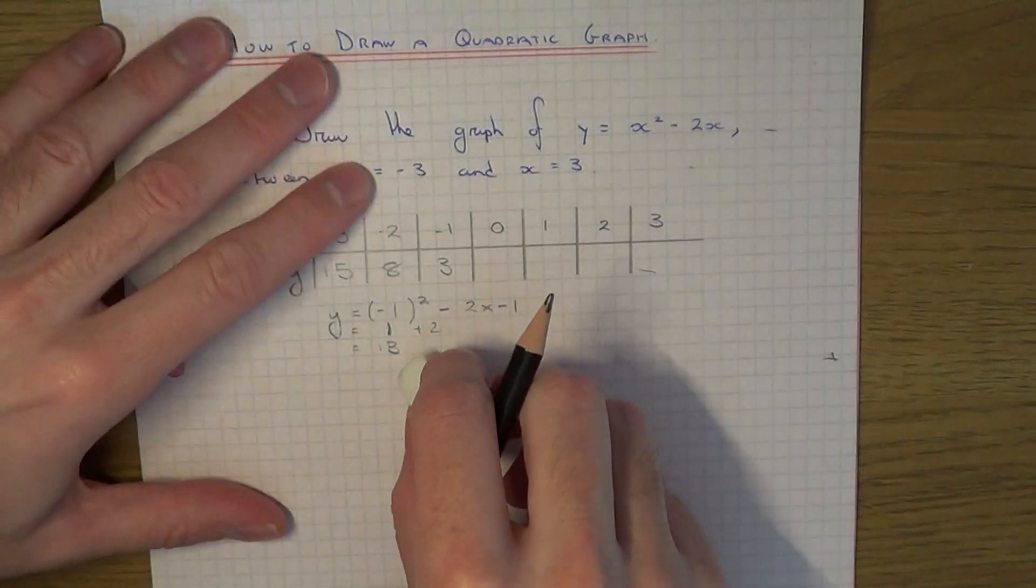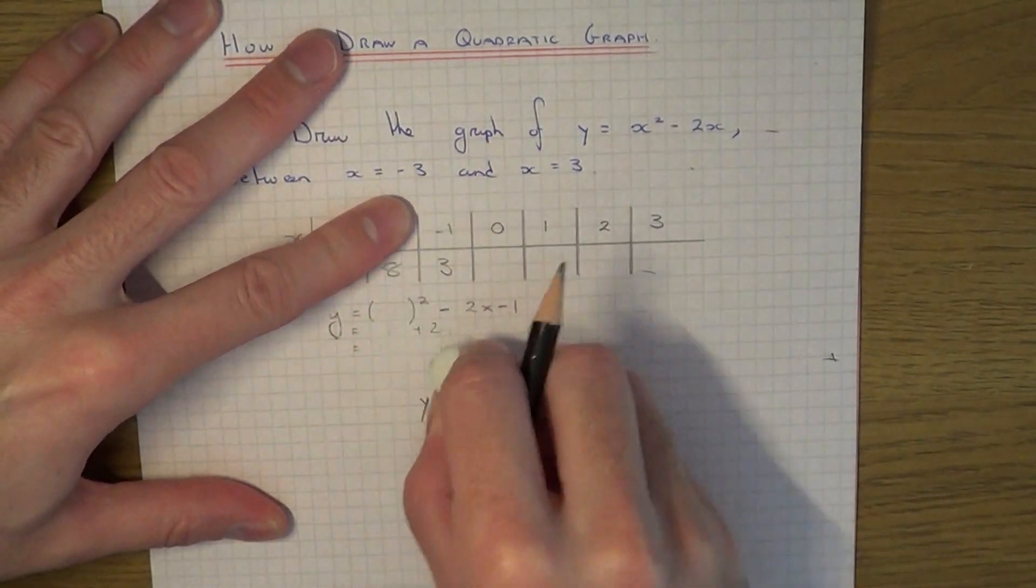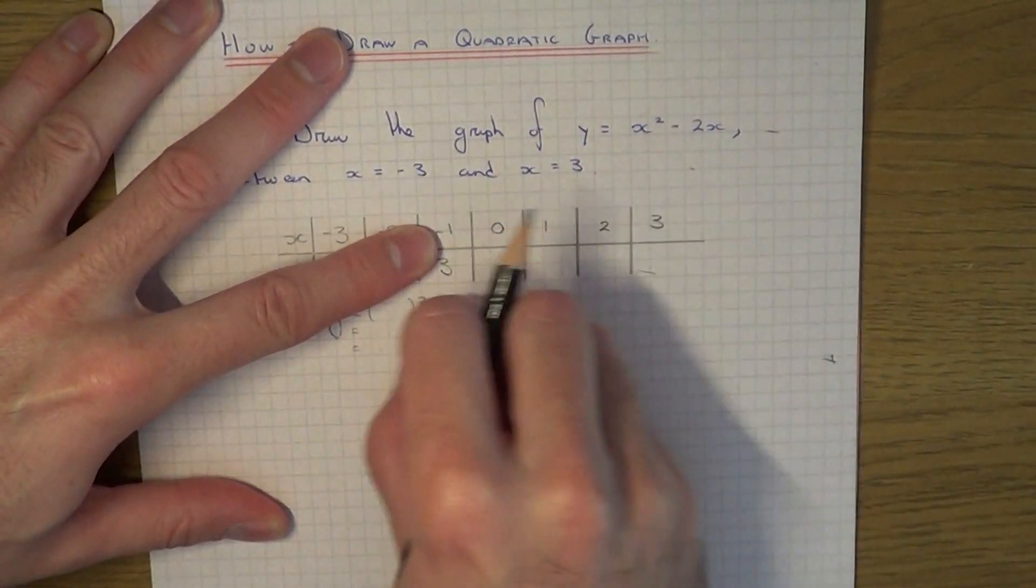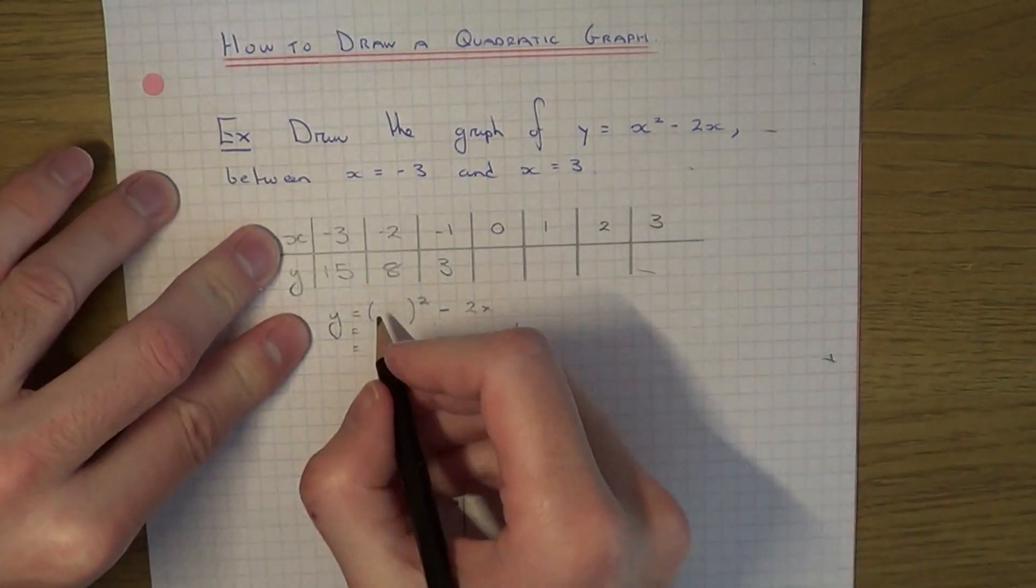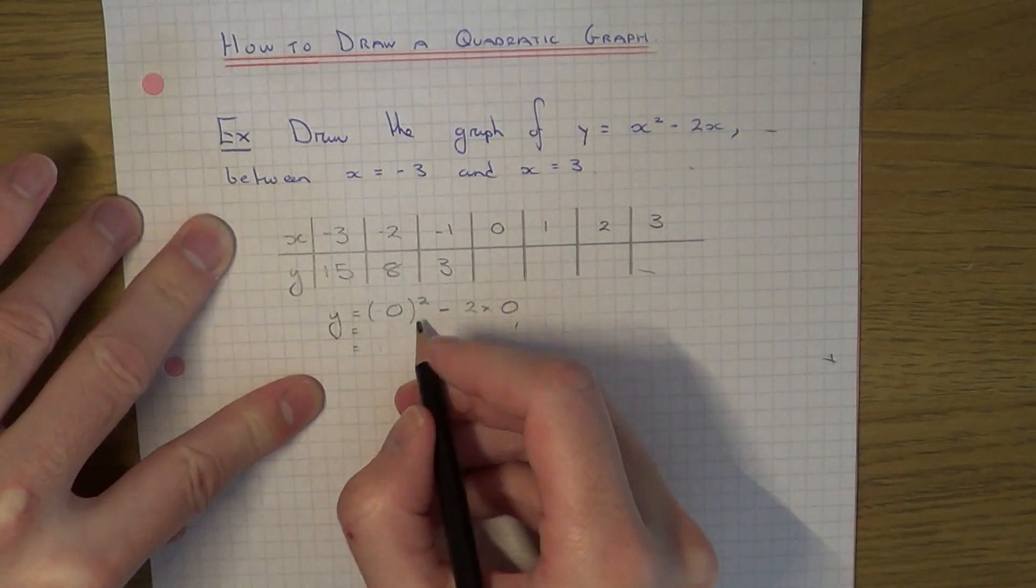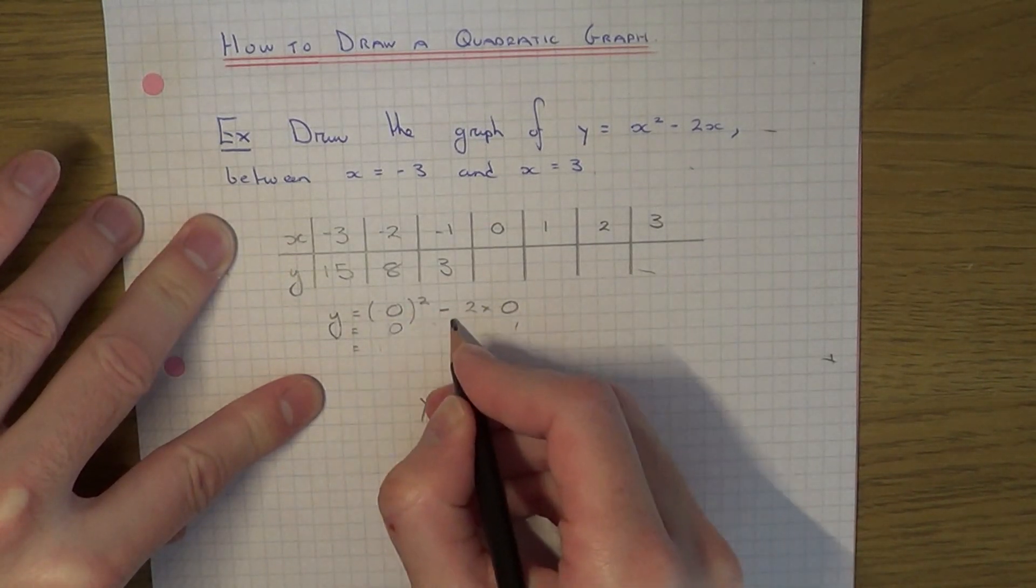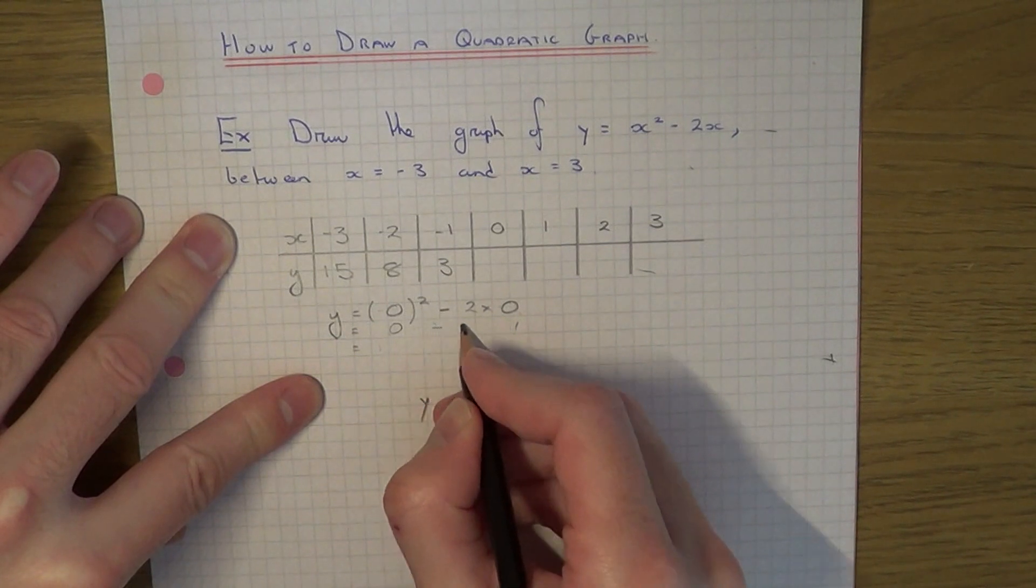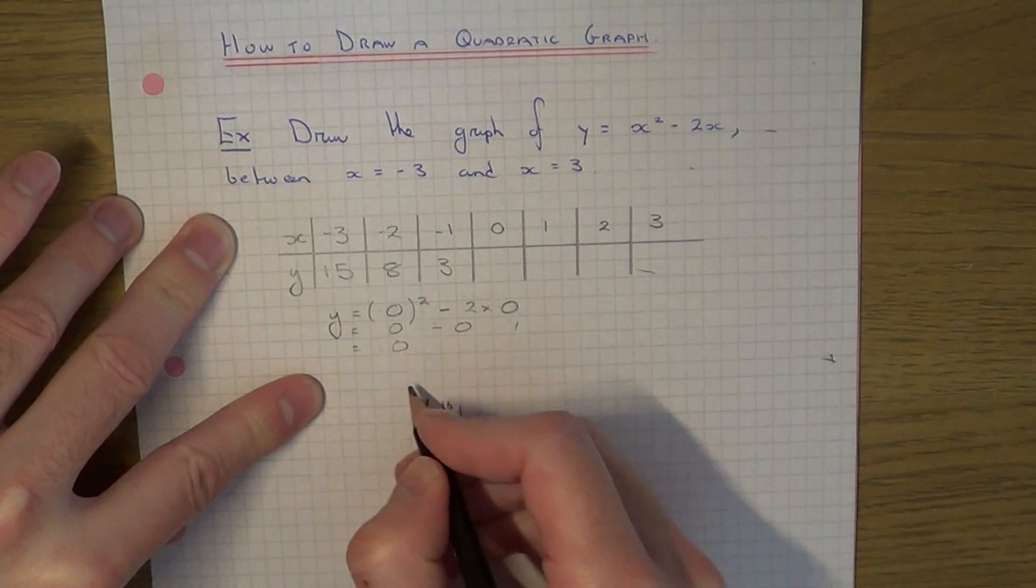Let's now do x equals 0. This time it would be 0 squared minus 2 times 0. 0 squared is 0. Minus 2 times 0 is also 0. So our answer is 0.